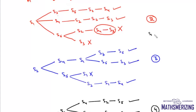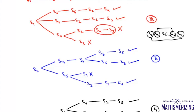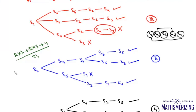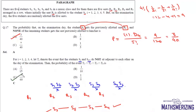By symmetry, the condition for S1 at R1 is the same as for S5 at R1 (2 cases each), and the condition for S2 at R1 is the same as for S4 at R1 (3 cases each), while S3 at R1 gives 4 cases. Total favorable cases = 2×2 (for S1 and S5) + 2×3 (for S2 and S4) + 4 (for S3) = 4 + 6 + 4 = 14. Probability = 14 divided by 5 factorial = 14/120 = 7/60, which is option C.